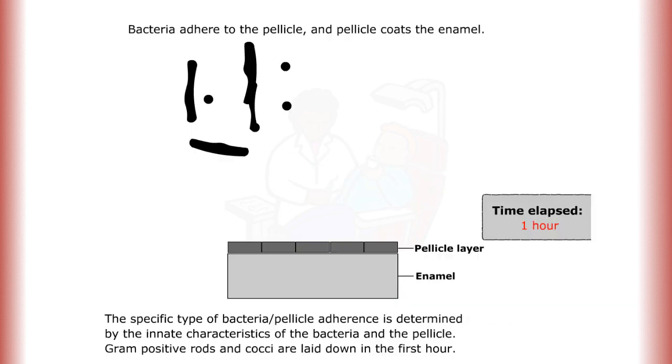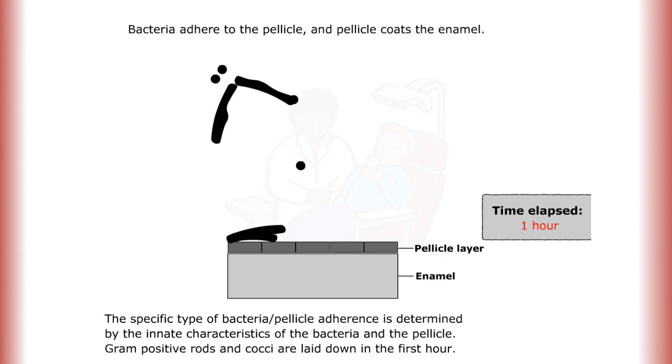Bacteria adhere to the pellicle, and pellicle coats the enamel. The specific type of bacteria or pellicle adherence is determined by the innate characteristics of the bacteria and the pellicle. Gram-positive rods and cocci are laid down in the first hour.